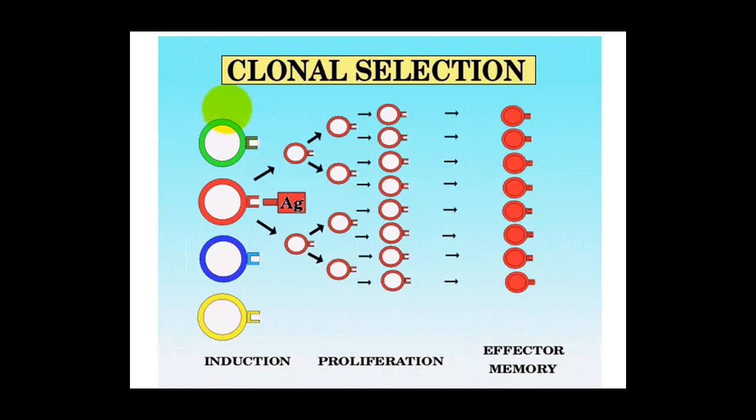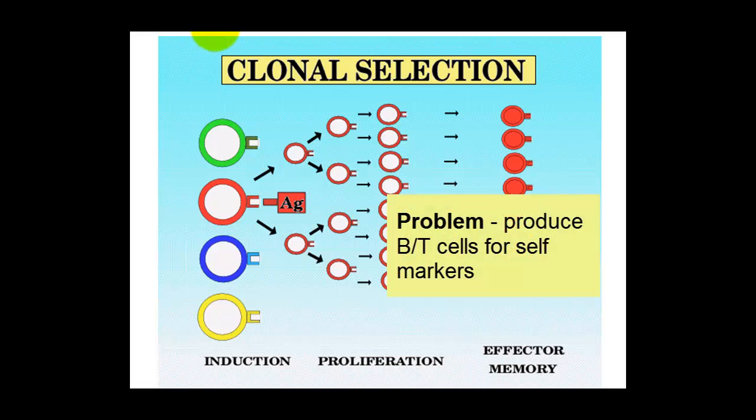One thing worth considering is that some of these B and T cells, because there's a huge variety of them, some of them might actually be set up so that they could recognize the body's own antigens, its own proteins, those ones that recognize self.